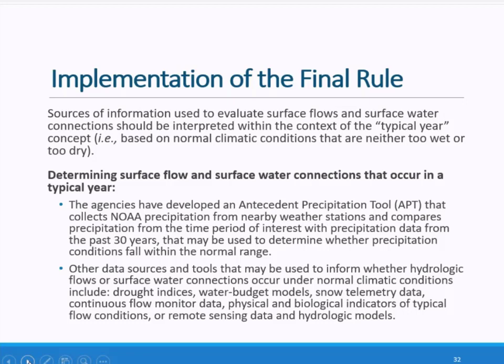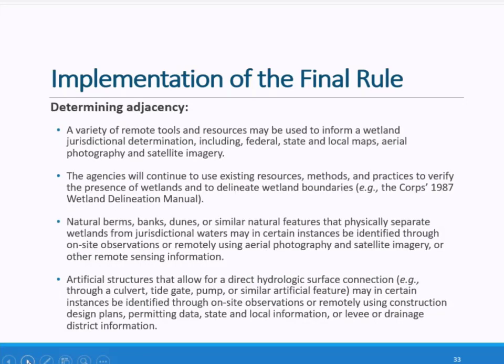The agencies have not modified their long-standing definition of wetlands. Prior to determining whether a wetland meets one of the conditions of adjacency under the final rule, it must first meet the regulatory definition of wetlands — having the appropriate hydrology, vegetation, and soils. The agencies will continue to use the existing tools and resources available to inform a wetland delineation, including a variety of remote tools and resources such as state and local maps, aerial photography and satellite imagery, or the U.S. Fish and Wildlife Service's National Wetlands Inventory Maps.